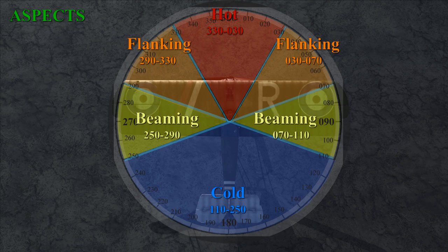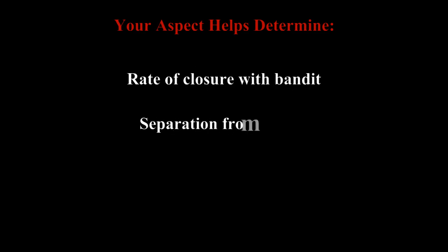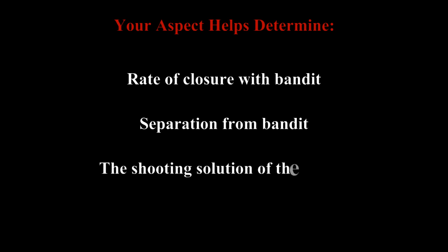So if you're cold to an enemy, that means the enemy is in the cold region. Aspects are important because they determine your rate of closure and separation from the bandit, and therefore they also control the shooting solution you offer to the bandit.